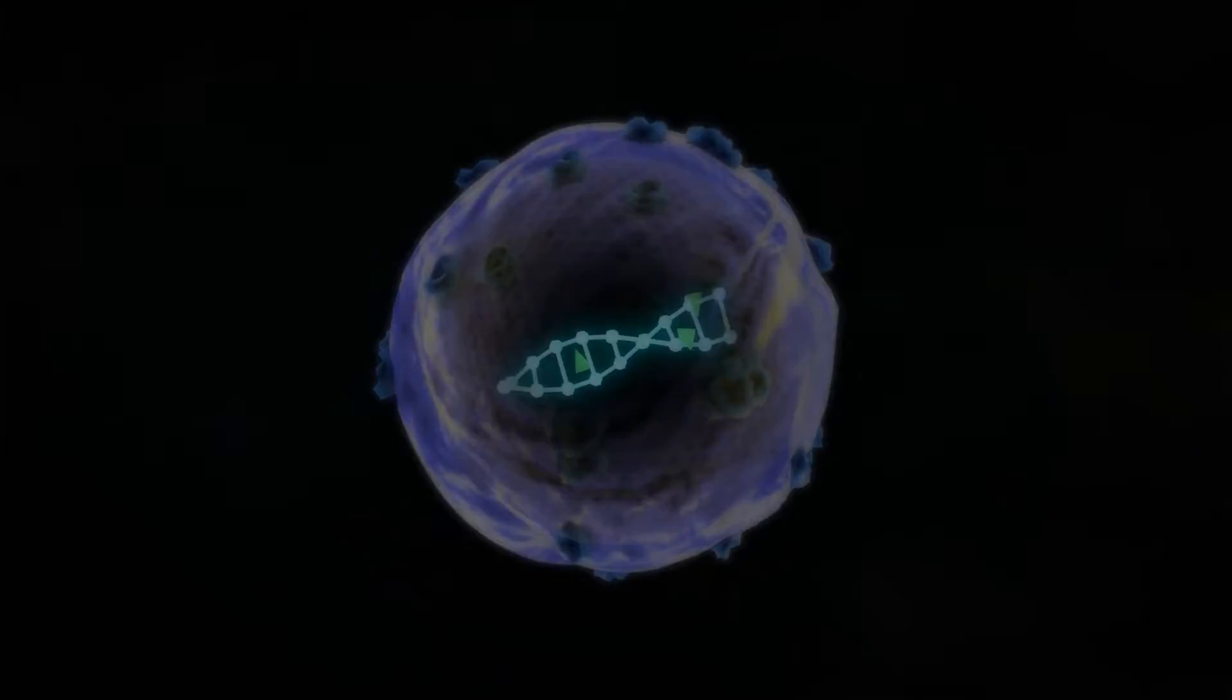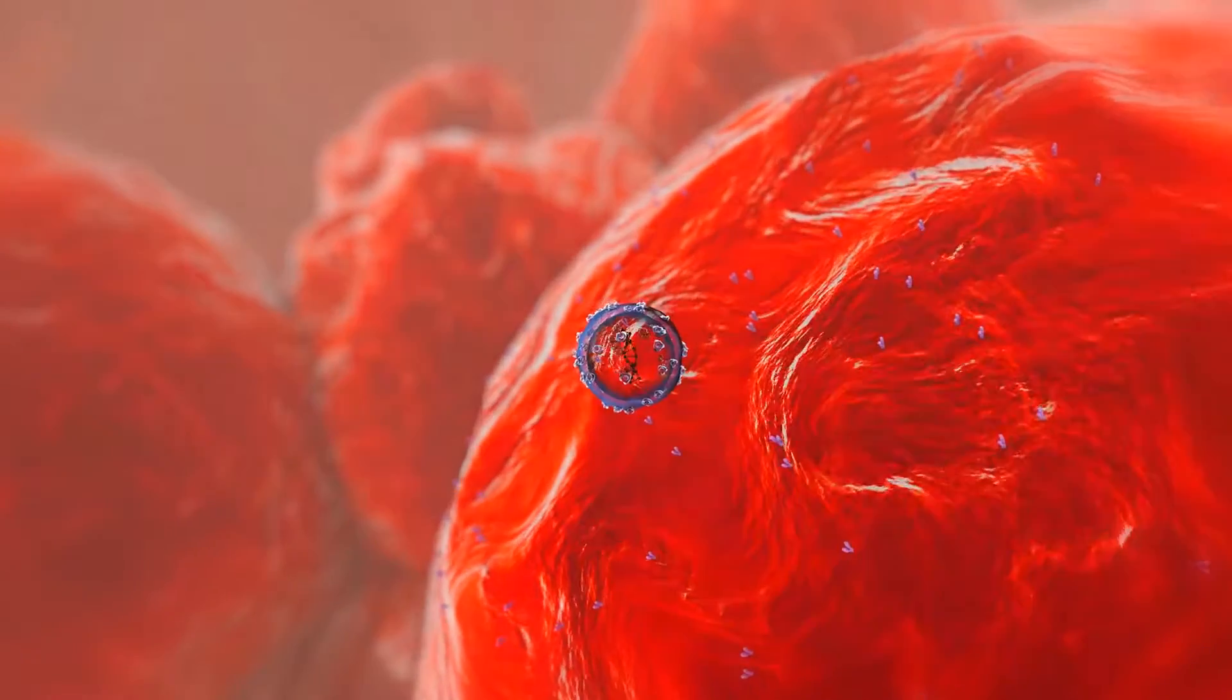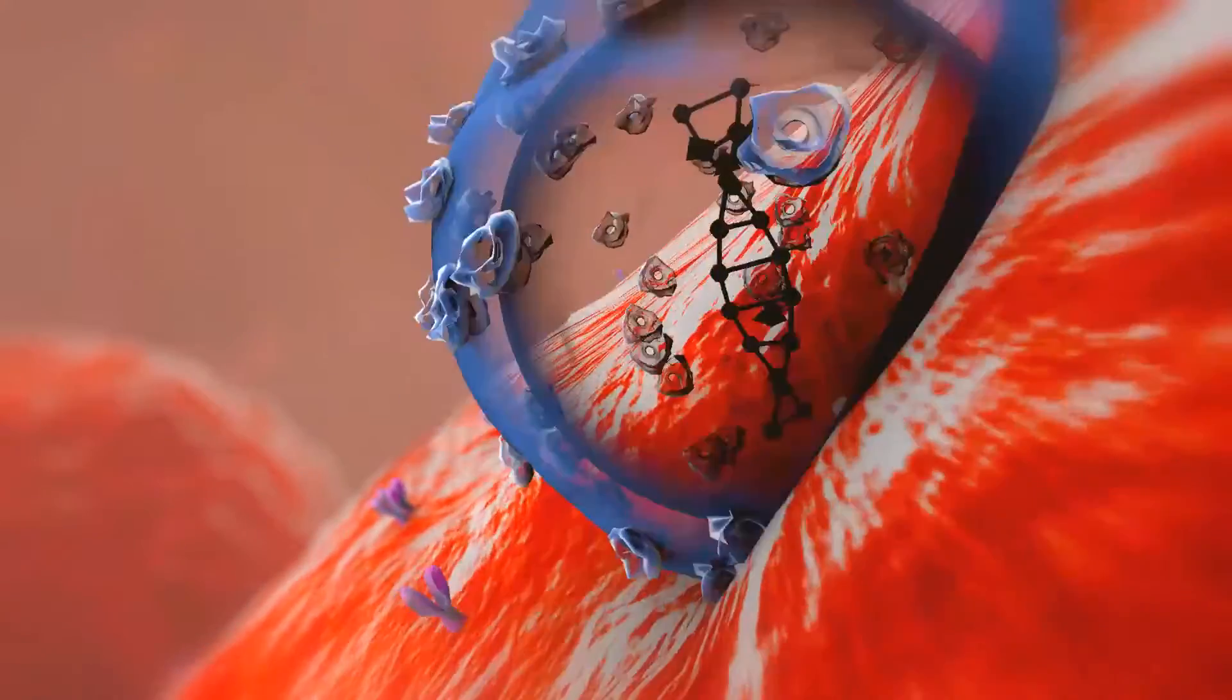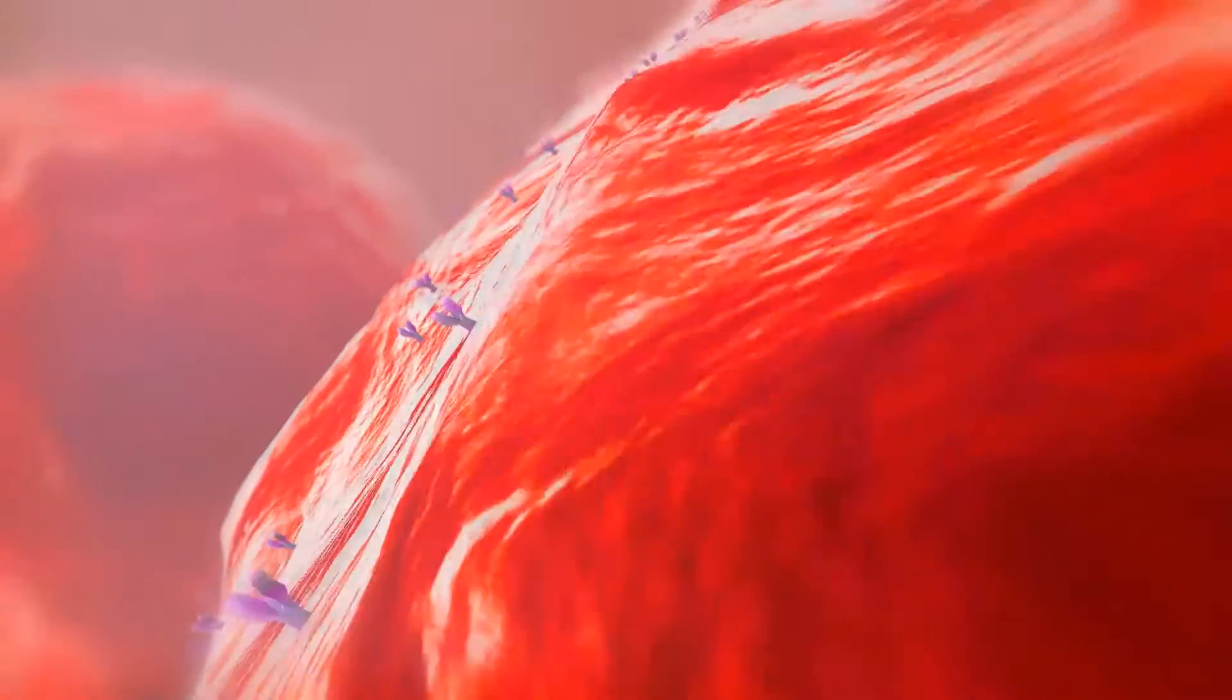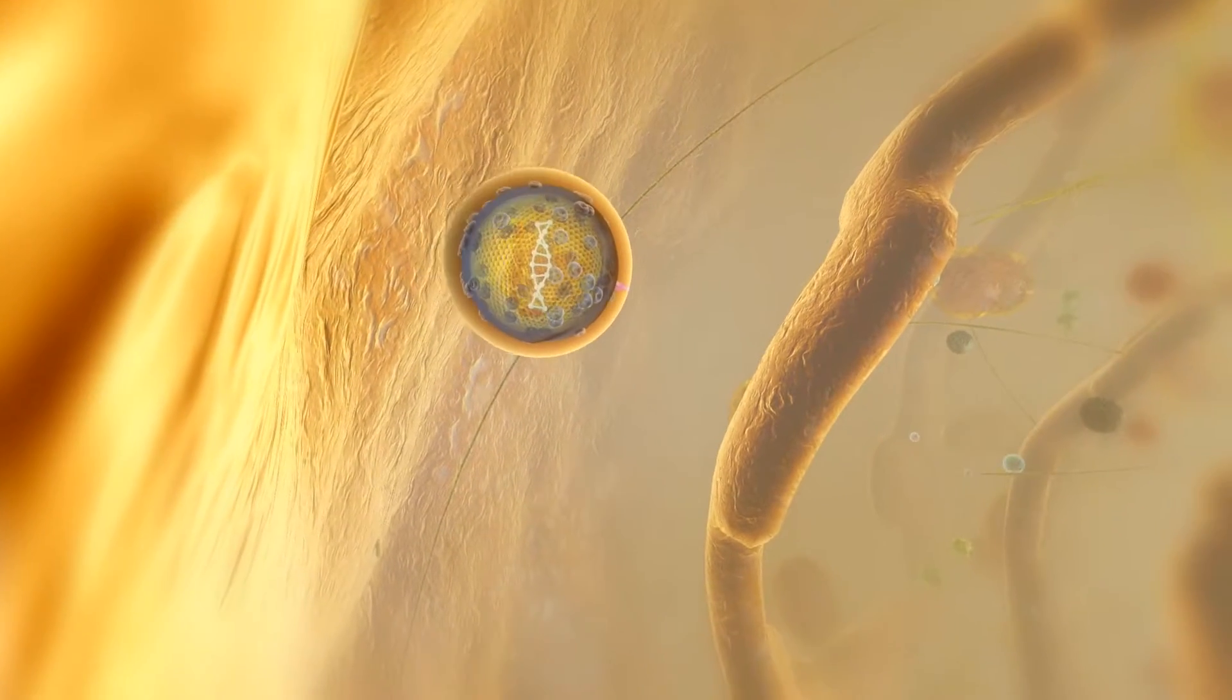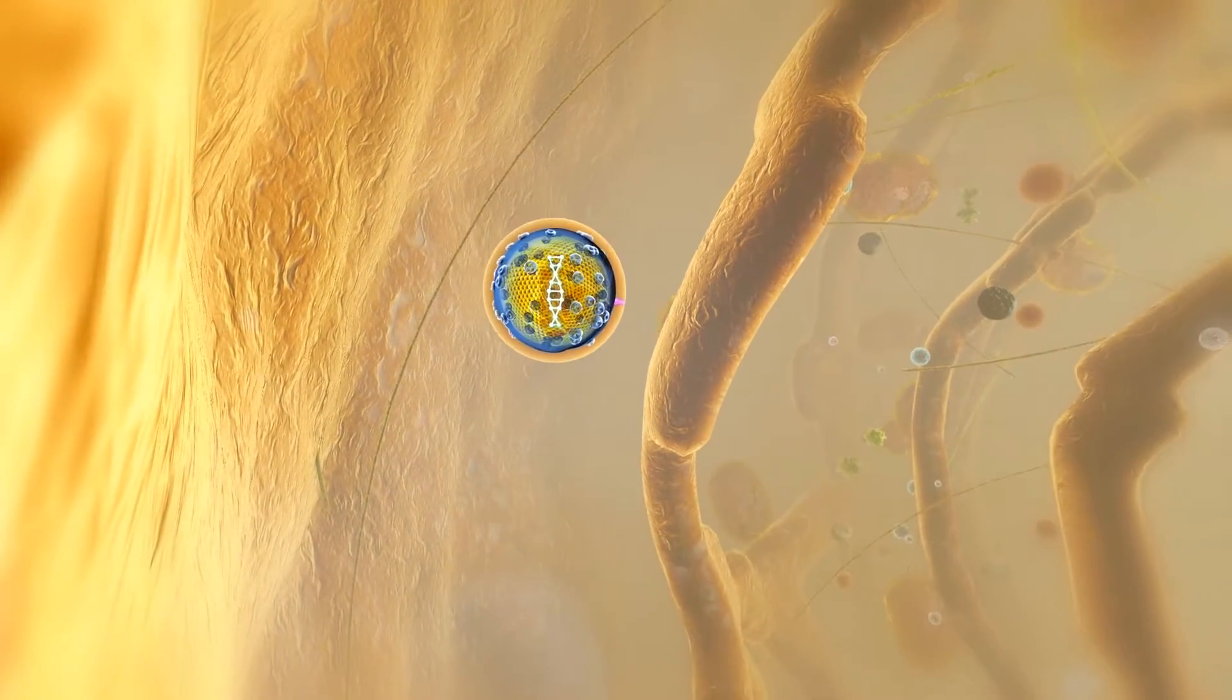Once the cell binds to the target receptor, the vesicle is eaten up and ends in a bag known as the endosome. Within the endosome, the vesicle surface changes, thereby enabling the disruption of the endosome and release of the vesicle contents into the cytosol.